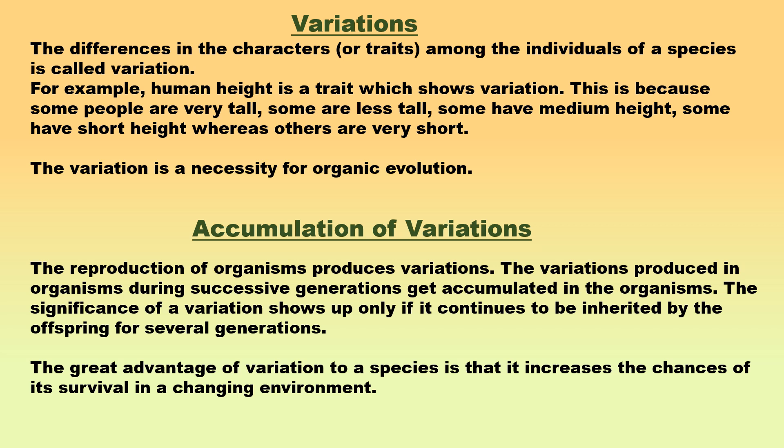For example, human height is a trait which shows variation. This is because some people are very tall, some are less tall, some have medium height, some have short height, whereas others are very short. Variation is a necessity for organic evolution.